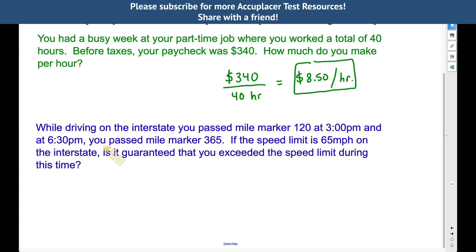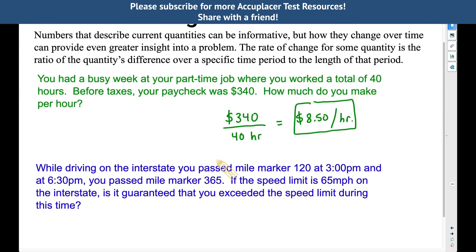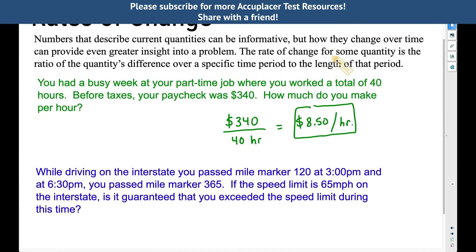Now what we're finding here is what's called an average rate of change. So we have a whole bunch of numbers here. We got mile marker 120 at 3 p.m. and then at 6:30 p.m. we passed mile marker 365. Taking into account this problem we did up here. We did some quantity divided by some time period. That is a good approach to take when you approach rates of change. But now what we want to do is we want to find a difference.